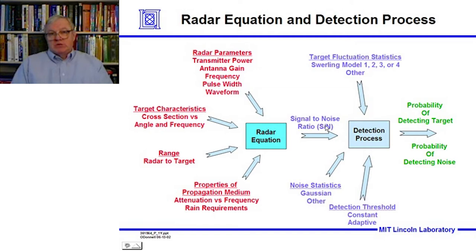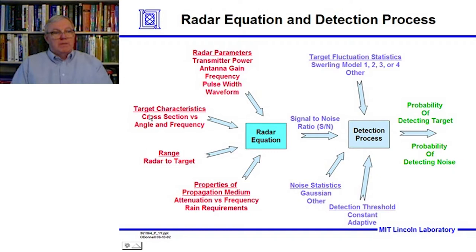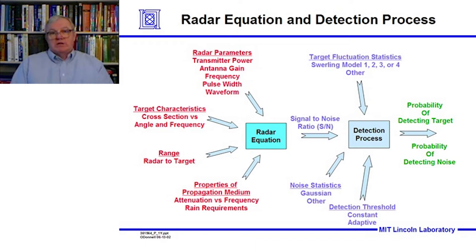The radar properties contributing to signal-to-noise ratio include transmitter power, antenna gain (directivity), frequency, pulse width, and waveform — all parameters under the radar designer's control. The target characteristics include its effective electronic area, or radar cross-section: how much of the incident microwave energy is reflected back toward the radar. The cross-section depends on the aspect angle and the frequency of the radiation relative to the size of the target.